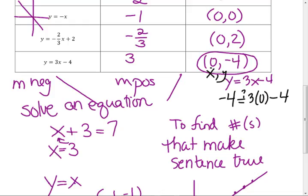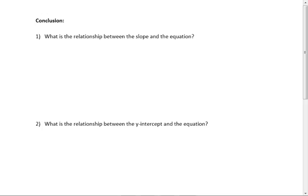What's 3 times 0? That's 0. What's 0 take away 4? It's negative 4. So minus 4 equals minus 4 — that makes a true statement. Could you just guess and check numbers to see which ones work? It'd take you a while. Or we can use the fact that we know what the slope is and we know what the y-intercept is. What's the relationship between the slope and the equation? This is y equals mx plus b.